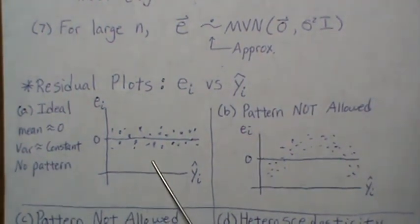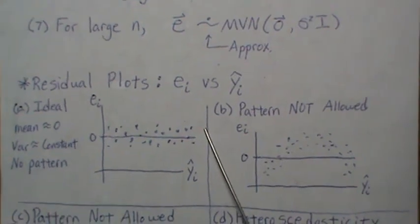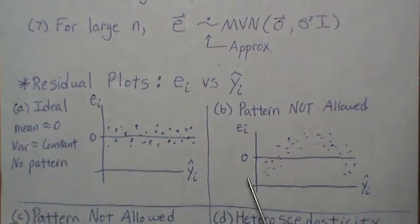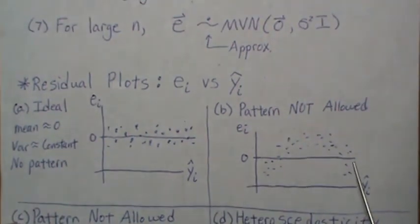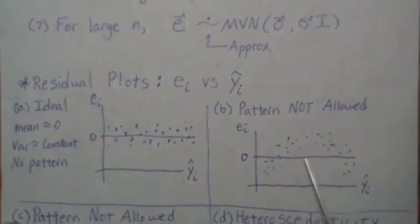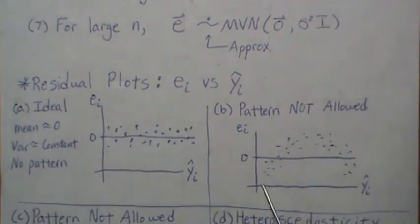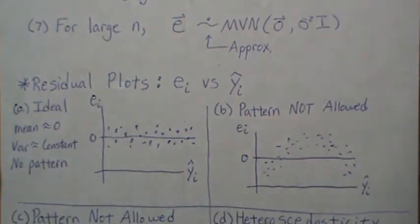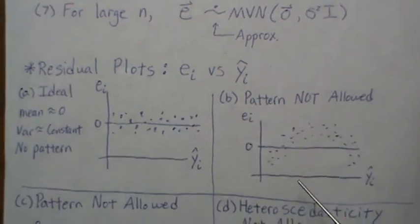When we deviate from this it means our model assumptions were probably not correct. So here in situation B, the residuals versus the fitted values, we can definitely see a curve or a pattern. It looks almost quadratic or second order, and patterns are not allowed. So this would be a violation. We need to maybe add some more predictive variables or increase them from linear to quadratic or polynomial.